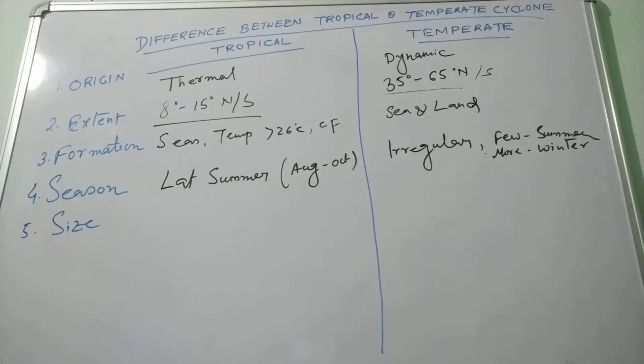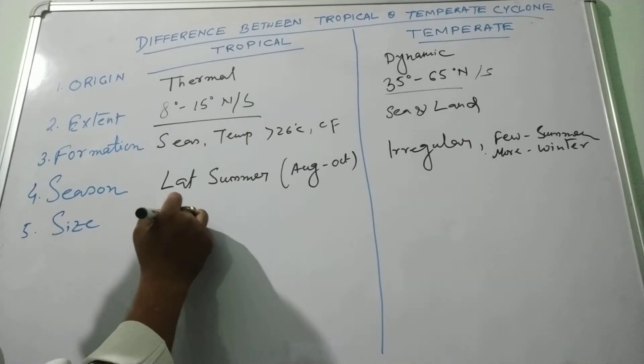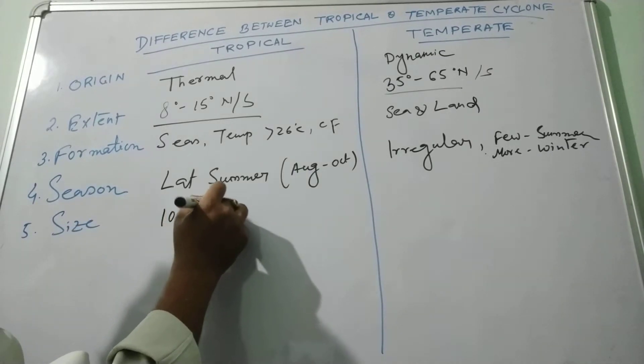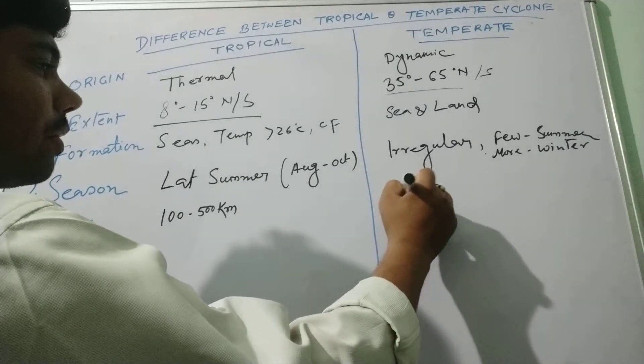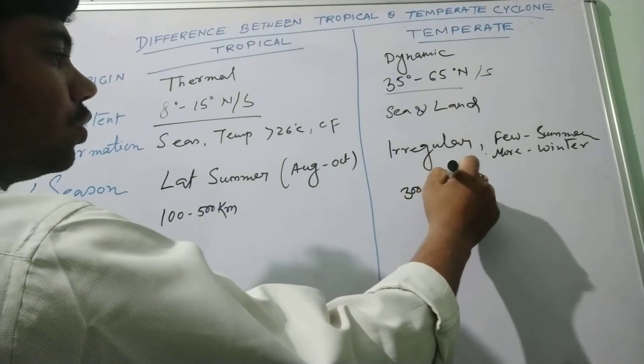Size, in terms of size it is limited to a small area like 100 to 500 km, whereas temperate cyclone will be extended from 300 to 2000 km.